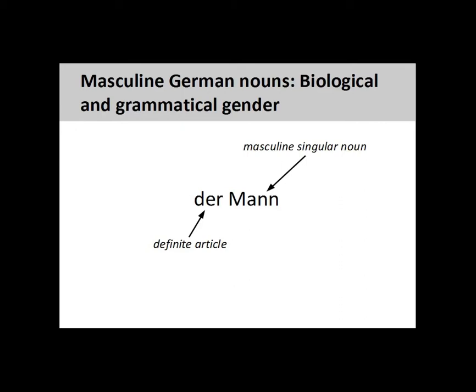When learning German, it is important to memorize the definite article with the noun. The German noun 'Tisch' (table) has a masculine grammatical gender, so its definite article is 'der'. Here, the grammatical gender does not indicate any biological gender of the noun. There is nothing particularly male about a table.